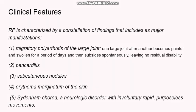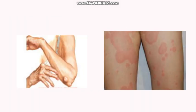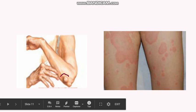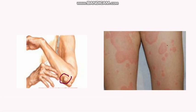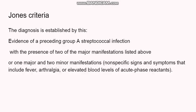Now going to the clinical features. In rheumatic heart disease, the first important feature is migratory polyarthritis. It is known as migratory polyarthritis because the inflammation of the joints migrates from one large joint to another, and the previous joint heals spontaneously with no residual disability. Then there is pancarditis, which we have already understood. Then there are subcutaneous nodules, which you can see in this picture. Then there is something known as erythema marginatum — you see a ring-like lesion with central clearing. Then there is Sydenham's chorea, which is involuntary movement of the hands.